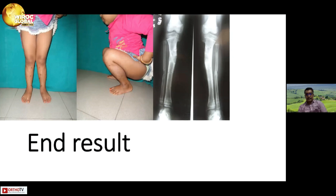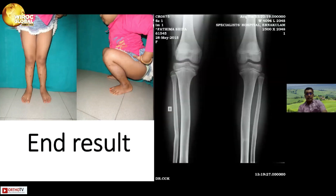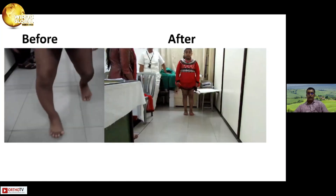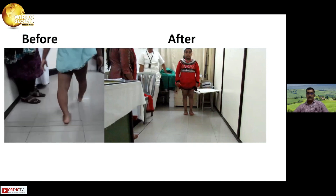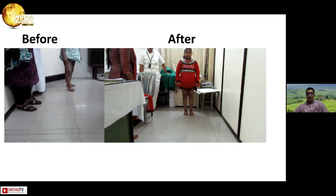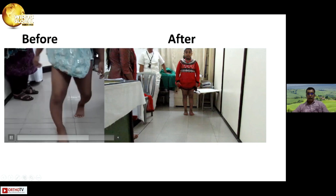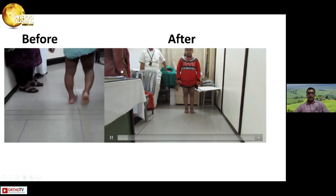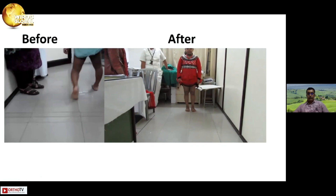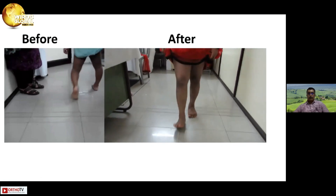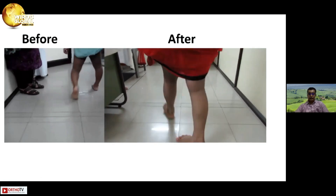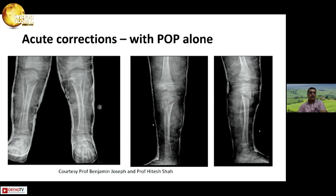We over-corrected to about 5 to 6 degrees of valgus, and this is before and this is after — almost a normal-looking gait. Acute corrections can be done in these early stages with plaster alone and you get a good correction, and if there is some under-correction or over-correction, you can also wet the plaster.